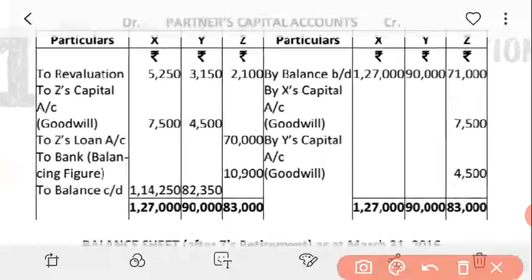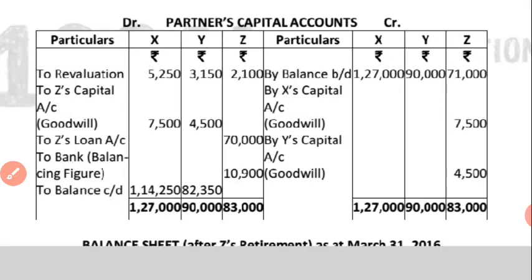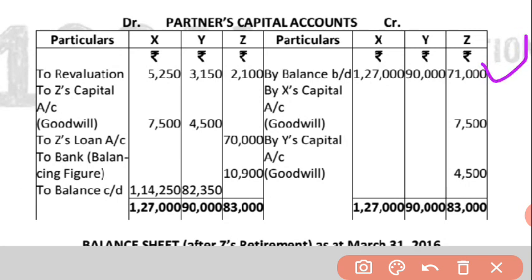Now we will prepare the capital account. The first entry is 'By Balance b/d' — we transfer the opening capital of all partners. The capital of X is 1,27,000, Y's capital and Z's capital of 71,000 are also transferred. Then we will handle the goodwill treatment — leave space for balance sheet entries and write the working note.